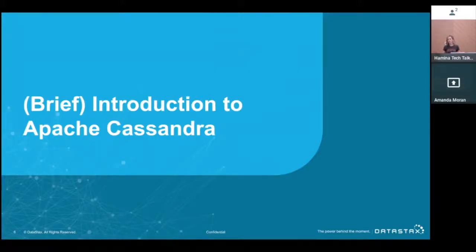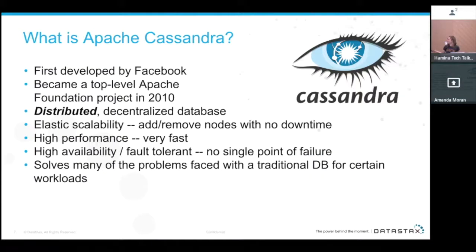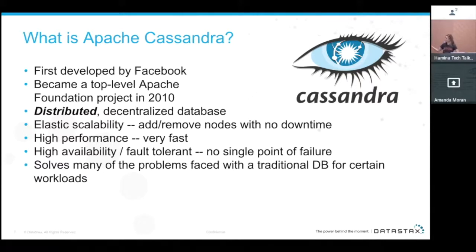We're going to do the world's briefest introduction to Apache Cassandra. This group is probably familiar with it since Cassandra has been around for 10 years, but let's do a high-level overview. It was developed by Facebook about 10 years ago and became a top-level Apache project in 2010.